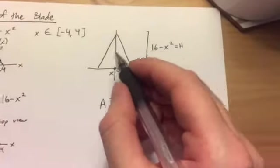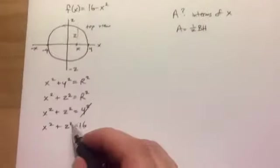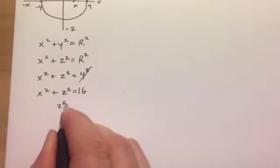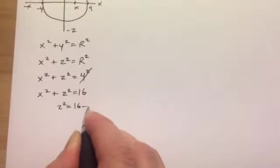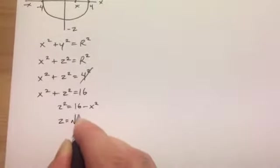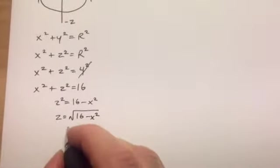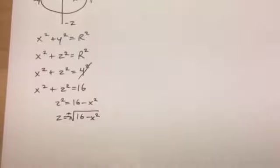We already have the height of the triangle, and we need to know what this is, one half of the base. So we'll come back to the circle, and we know we need z, so I'm just going to solve for z. z squared equals 16 minus x squared. z equals square root of 16 minus x squared. Actually, z equals plus or minus square root.